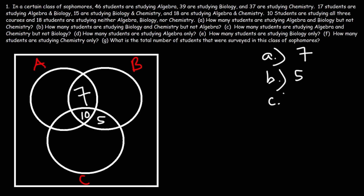Part C: how many students are studying algebra and chemistry but not biology? We know 18 are studying algebra and chemistry — that includes the whole overlapping region. Out of those 18, 10 are studying algebra, chemistry, and biology. So 18 minus 10 gives us 8 students studying algebra and chemistry but not biology. That's the answer for Part C.